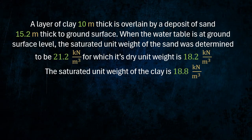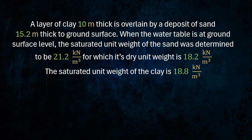When the water table is at ground surface level, the saturated unit weight of the sand was determined to be 21.2 kilonewtons per cubic meter, for which its dry unit weight is 18.2 kilonewtons per cubic meter. The saturated unit weight of the clay is 18.8 kilonewtons per cubic meter.